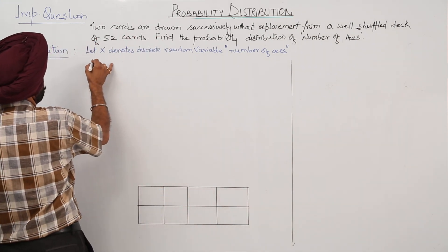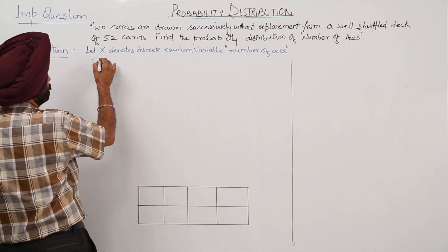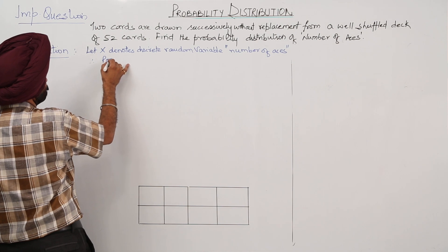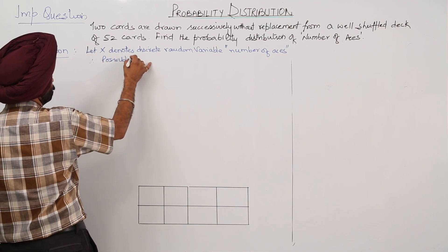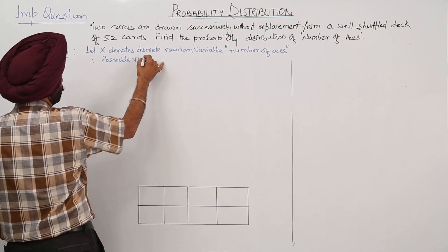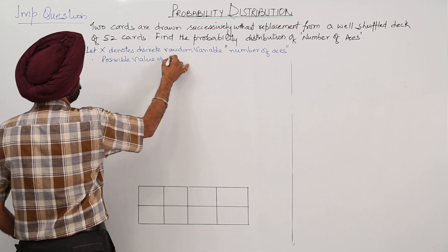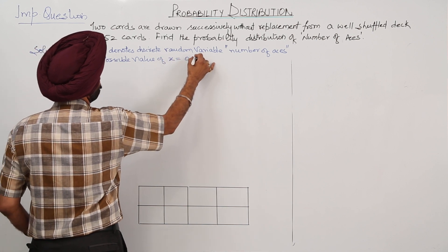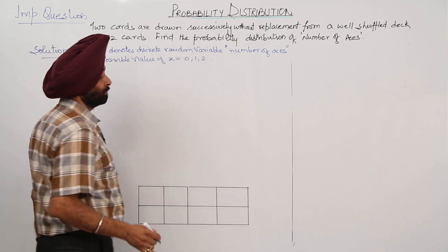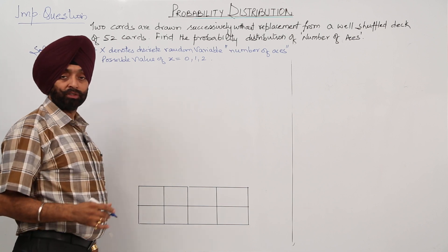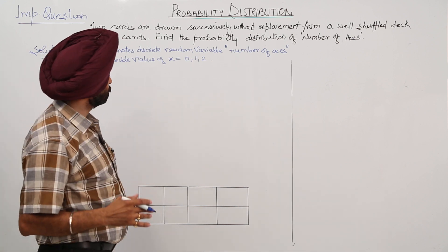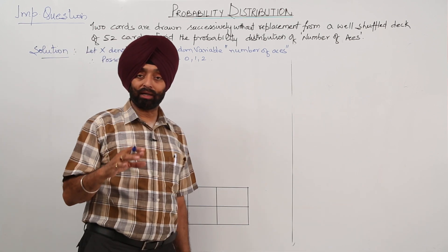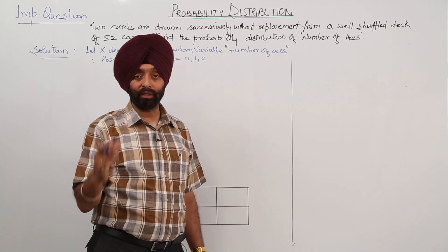When 2 cards are drawn, the possible values of X are 0, 1, and 2. X = 0 means no ace cards, X = 1 means 1 ace card, and X = 2 means both ace cards.